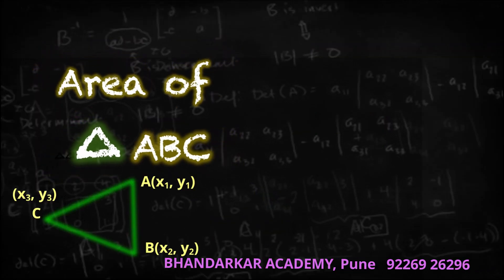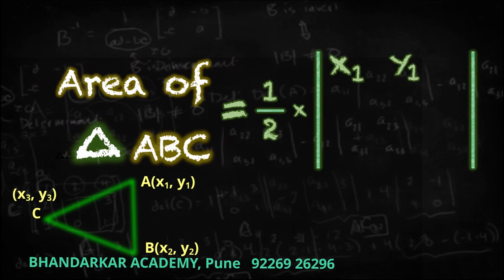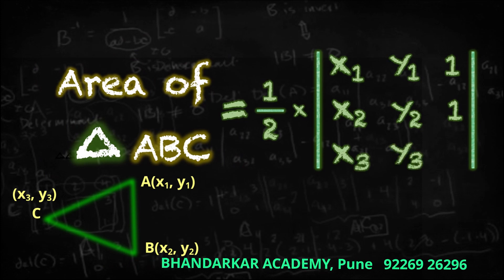Area of triangle: one half into determinant of X1, Y1, 1; X2, Y2, 1; and X3, Y3, 1.